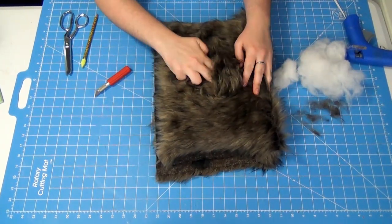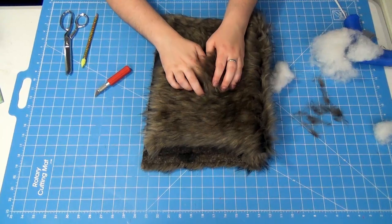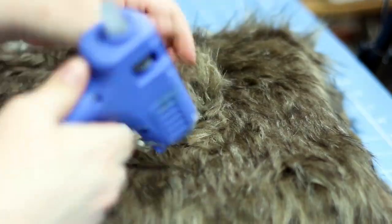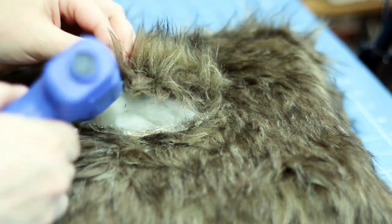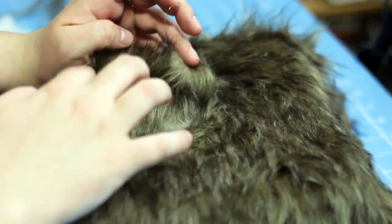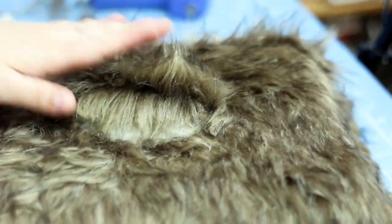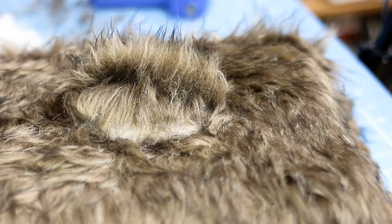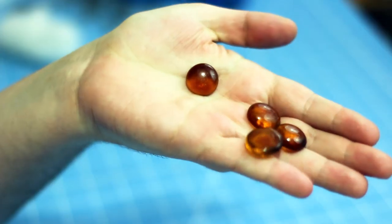Using my fiberfill, start stuffing the pouch. Then add some hot glue along the front edge and push down some of the fur to cover the filling, leaving some sticking up as you can see here.